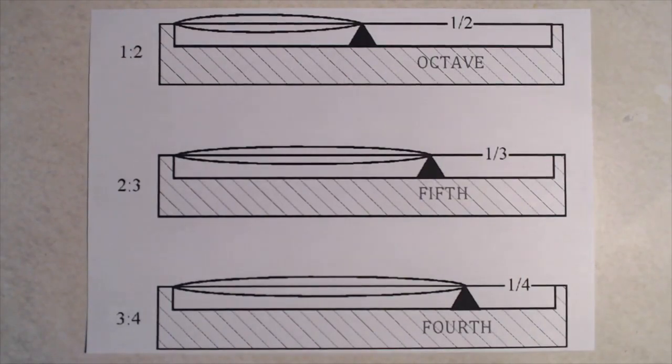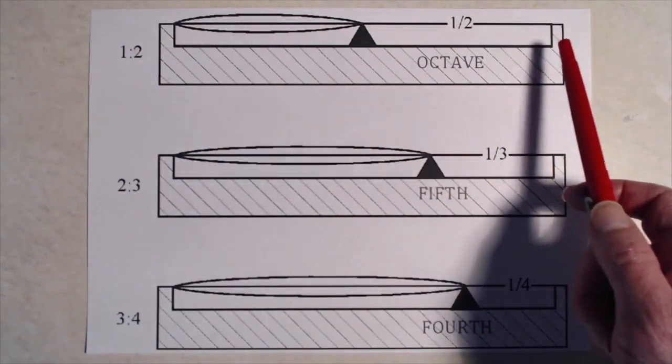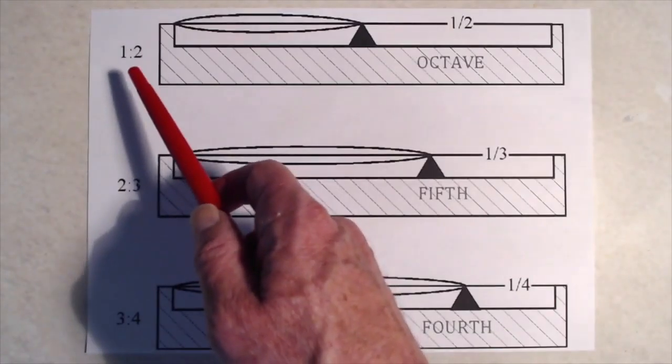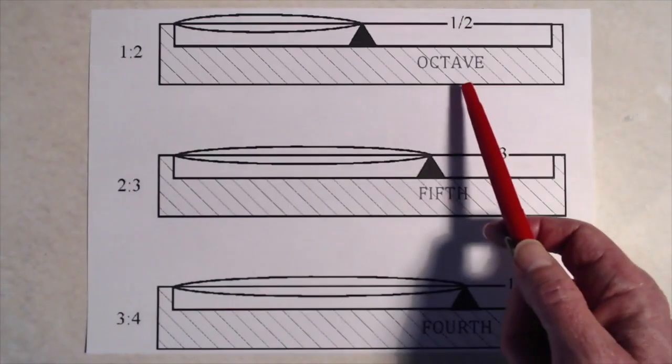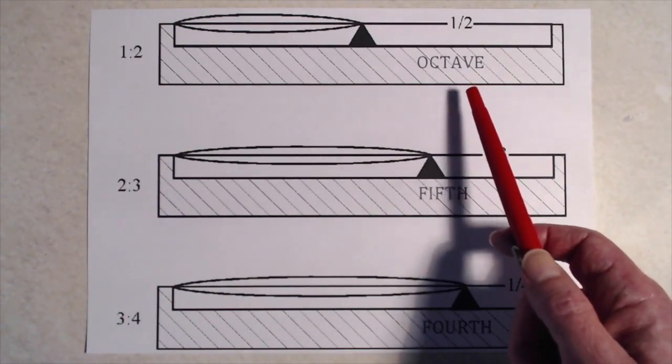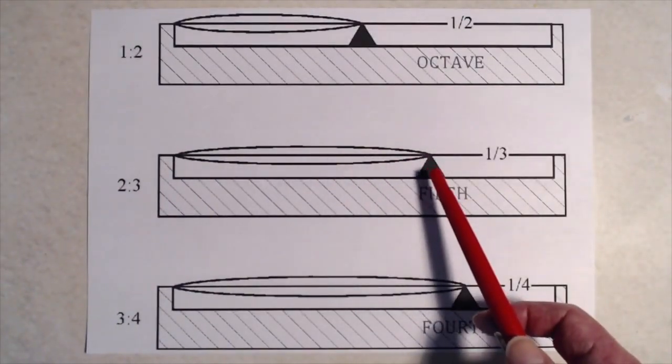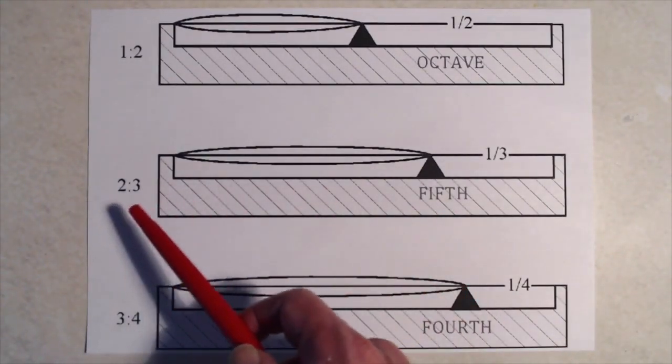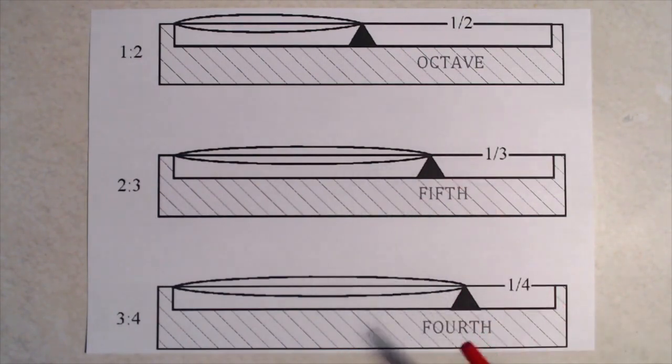So here we've got a diagram that just summarizes what we've been seeing on the guitar, that if you have a string and you stop it halfway along, you'll produce an octave. So the simplest ratio is one to two, giving you the octave, which is one of the perfect consonances. And if you stop the string two thirds of the way along, you produce a fifth, which is the next simplest ratio, two to three, and is the other perfect consonance. And if we stop the string three quarters of the way along, so we have a ratio of three to four, we produce a fourth.